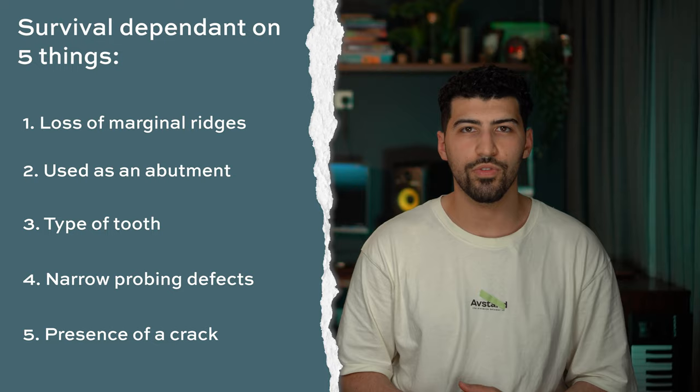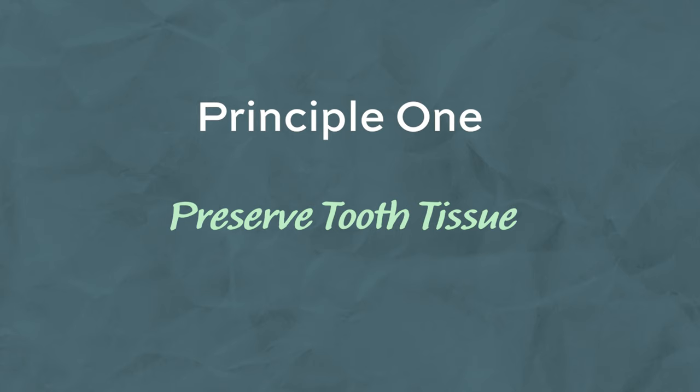The first principle is to preserve as much tooth structure as possible. Wherever you can, do an onlay instead of a crown. It is increasingly believed that the ability of a root-filled tooth to resist fracture is directly related to the amount of tooth tissue remaining — the more tooth tissue remaining, the less likely it is to fracture. But we should also be aiming to reduce the amount of stress that the tooth will endure.